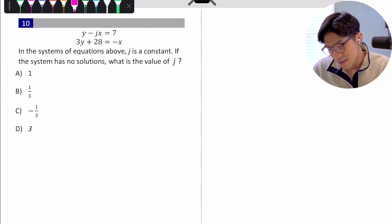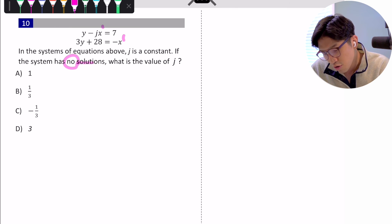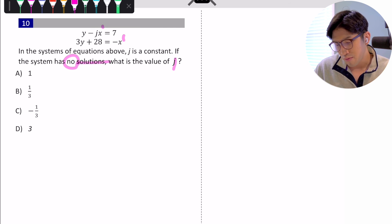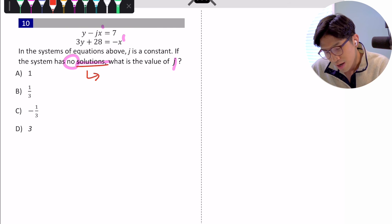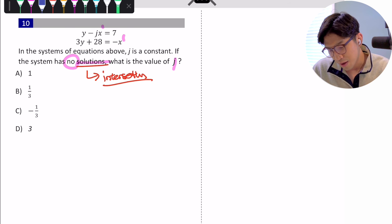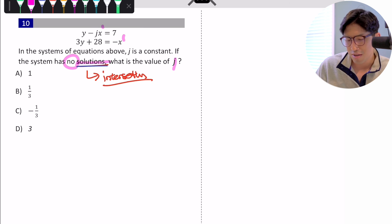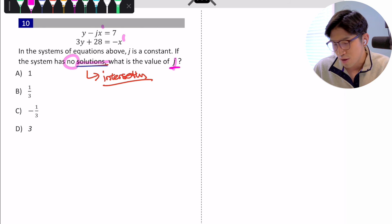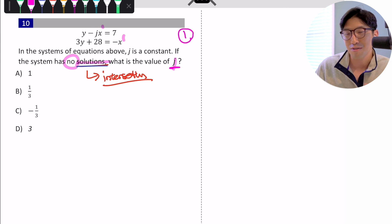The fifth question gives us two line equations and asks: if the system has no solutions, what is the value of j? From the previous question we know that with two equations or graphs, a solution refers to an intersection. So no solution means these two lines never touch each other. One approach is to convert them to slope-intercept form and match slopes, but that takes a long time. There's a faster way: use what's known as the matching rule.